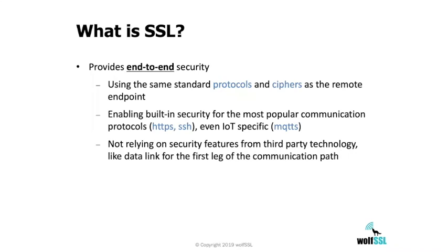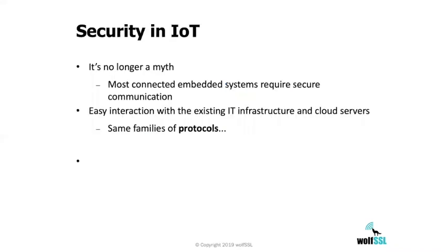The advantage of end-to-end security is that it's completely implemented at the endpoint level, so it doesn't rely on intermediate nodes you don't control in the network, or third-party secure layers such as a data link layer. Instead, we're talking about standard protocols that ideally all machines can speak. When talking about security in IoT, IoT shares its roots with the embedded market. Nowadays many embedded devices are connected to a network, sometimes even the internet, requiring secure communication.